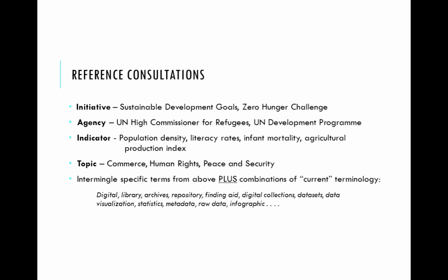The four items are: Initiative — are they looking for a specific initiative such as the Sustainable Development Goals? Agency — do they know the UN agency they are researching? Indicator — there are thousands of indicators contained within these databases that could range from literacy to trade statistics. And Topic — if they need more guidance, you can help them broaden their search to see what category of UN information they might be looking for.